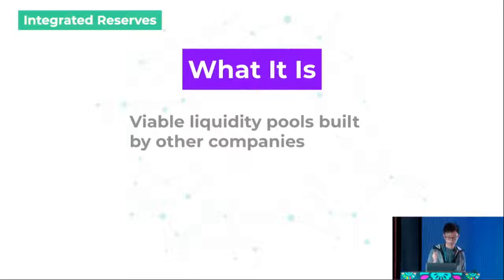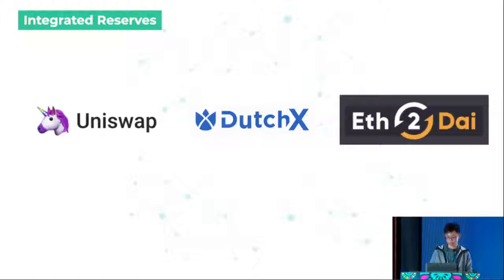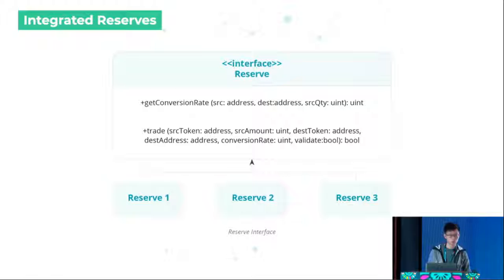Finally, we have what we call Integrated Reserves — viable liquidity pools built by other companies. Three examples: first is Uniswap, where you contribute whatever liquidity you have, it's kind of like passive income — after a while you take it out and your money grows. Second is DutchX, built by Gnosis. Third is If2Die, previously known as the Oasis DEX. How we connect with these different projects is by writing what we call a connector or hybrid contract that conforms to our reserve interface — just implementing two functions in a Solidity smart contract. If you want to build your own reserve type, all you need to do is implement this interface, and this information is available on our developer portal.